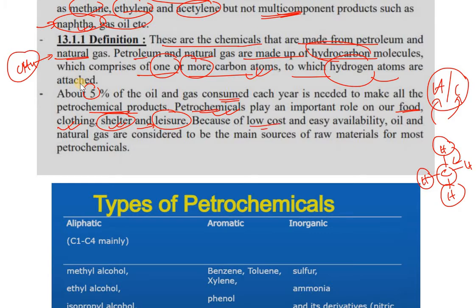Because of low cost and easy availability, oil and natural gas are considered to be the main sources of raw material for most petrochemicals.